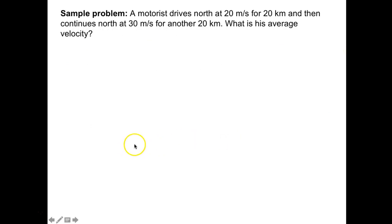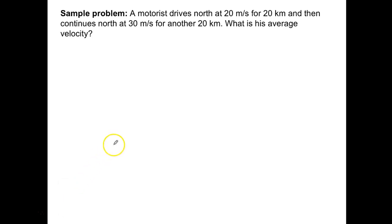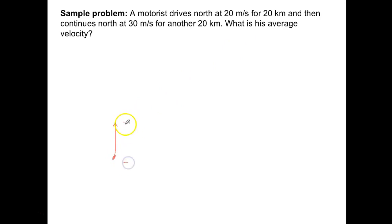Let's go ahead and do this problem. We've got a motorist, and probably the best thing to do is to draw a picture first. A motorist starts here and drives north at 20 meters per second for a distance of 20 kilometers. So the change in position, or distance, is 20,000 meters.